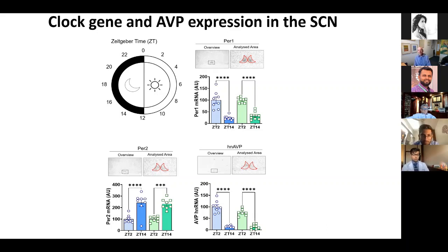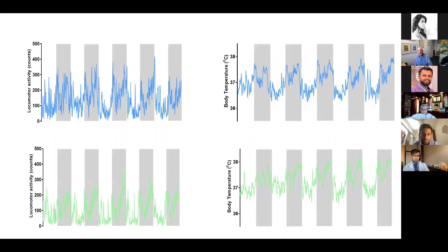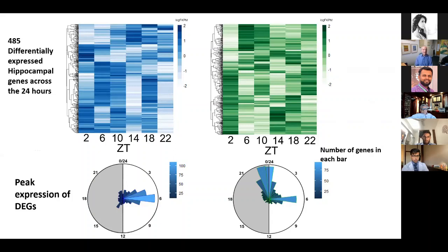We also checked other outputs of the suprachiasmatic nucleus. When the SCN is damaged, animals lose their circadian locomotor activity and daily body temperature changes. Normal animals showed a lovely circadian rhythm in both locomotor activity and body temperature. The animals given glucocorticoids were identical — no difference whatsoever. Again, no evidence that glucocorticoids affect the suprachiasmatic nucleus.